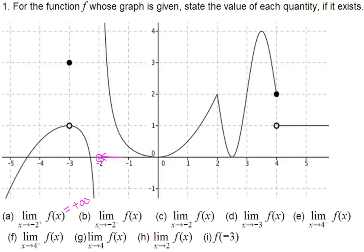In part b, when x approaches negative 2 from the left side — the little negative sign means left side — when x approaches negative 2 from the left side, the function is decreasing without bounds, so that's negative infinity.